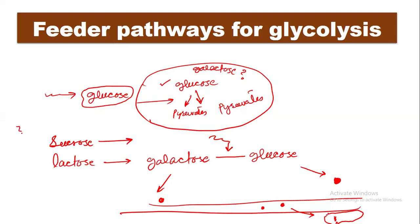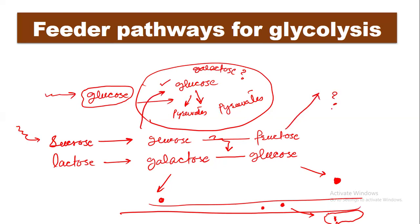Similarly, if we consume table sugar or sucrose, which is made up of glucose and fructose, the enzyme sucrase will break the bond between these two sugars. Glucose will again enter glycolysis, but what will happen to the fructose? In this lecture we will see how monosaccharides other than glucose manage to enter glycolysis. These pathways are called the feeders pathway.